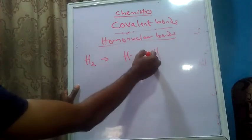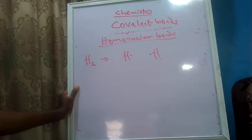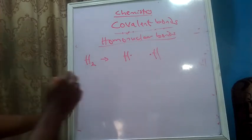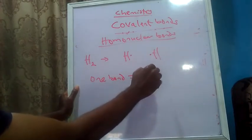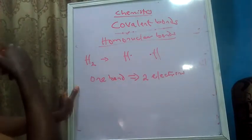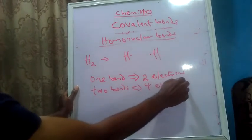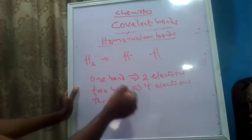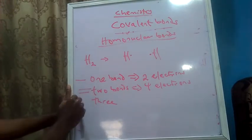What we see here is two hydrogen atoms that are unstable initially, trying to align together to form a bond. In chemistry, one bond represents two electrons. Two bonds means a double bond, and a triple bond is three lines. These are our covalent bonds.